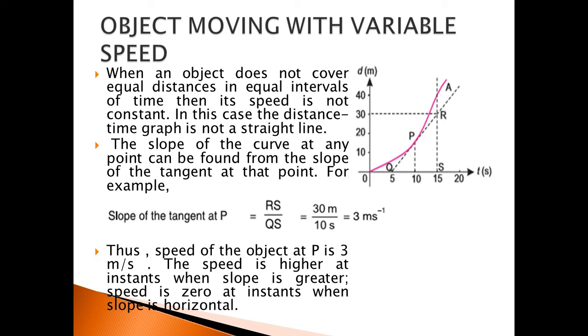The speed is higher at the instant when the slope is greater. Speed is zero at the instant where the slope is horizontal.